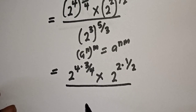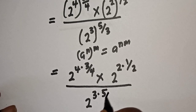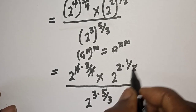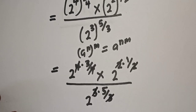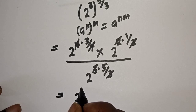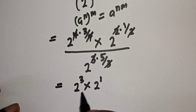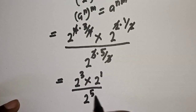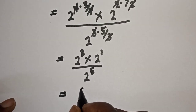Divided by 2 raised to power 3 multiplied by 5 over 3. You can see this cancels this, this cancels this, and this cancels this. So we have 2 raised to power 3, multiplied by 2 raised to power 1, divided by 2 raised to power 5.